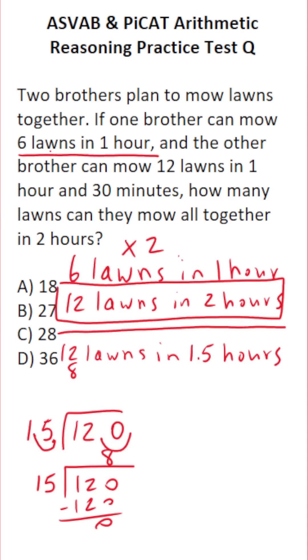So he can mow eight lawns in one hour. And if we multiply this by 2, that means he can mow 16 lawns in two hours.